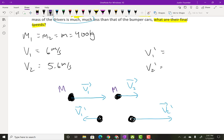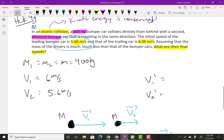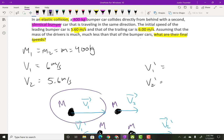So they tell me it's identical. That means both cars are going to be 400 kilograms. So in other words, mass one equals mass two, which I'm just going to call M and that's equal to 400 kilograms. And then they say the initial speed of the leading bumper car is 5.6 meters per second and that of the trailing car is six meters per second.